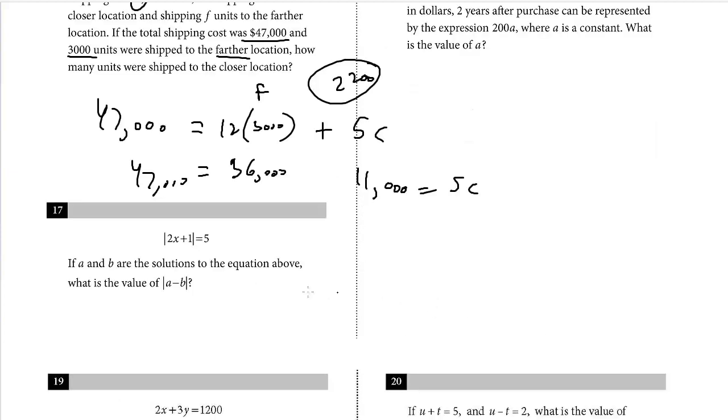Question 17. The absolute value of 2x plus 1 equals 5. If a and b are solutions to the equation, what's the value of the absolute value of a minus b? Think about the operation being done first. What are the two values that the operation could yield to make this a true statement? It could be 5, but also negative 5, because negative 5 absolute value is 5. So think about the operation inside: 2x plus 1 could equal 5, that's a solution, or 2x plus 1 could equal negative 5. Those are the two solutions.